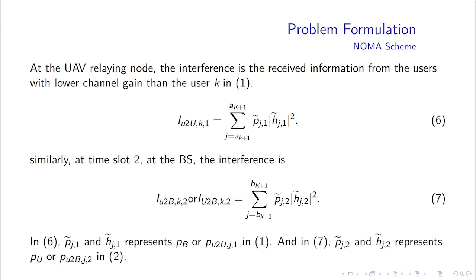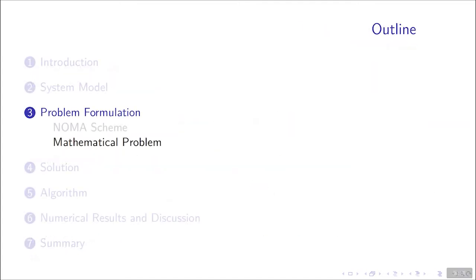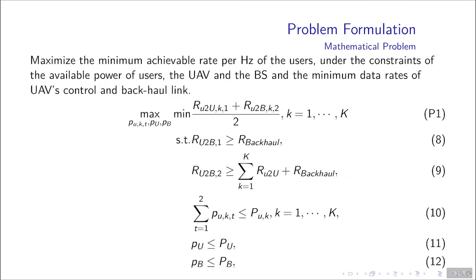Next is the mathematical problem of the system. To maximize the minimum data rate per hertz of the users, we propose problem 1 under the constraints of the available power of users, the UAV and the base station, and the minimum data rates of UAV's control and backhaul links.